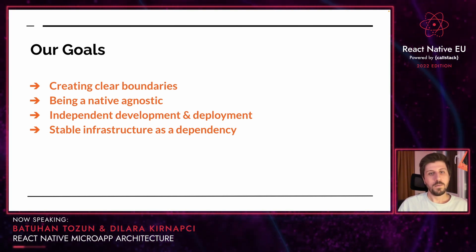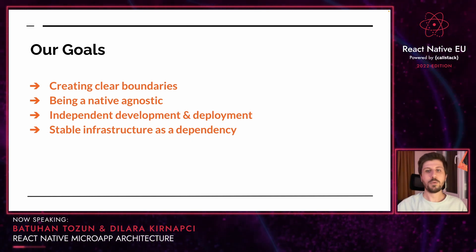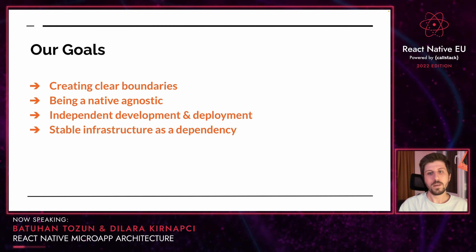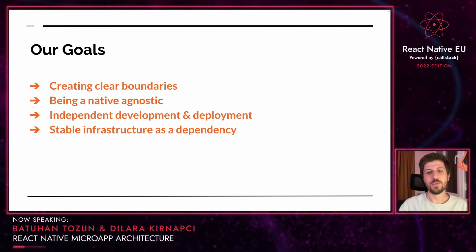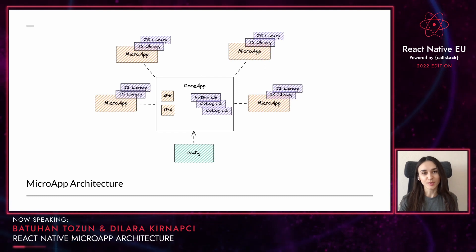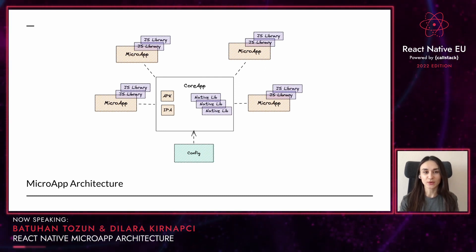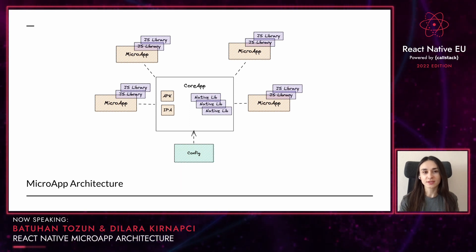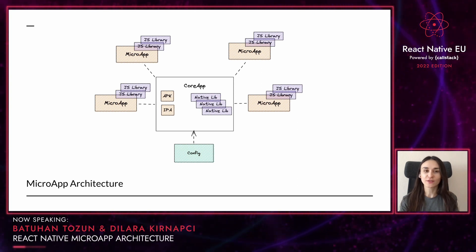Once we realized all of that and understood how quickly we are growing, we came to the conclusion that it won't be possible to achieve our goals with a simple monolithic React Native-based structure. Let's talk about the technical part. Basically, we divided the monolithic application into microapplications, as you can see in the main picture. Firstly, we will talk about the general structure, then we are going to dive into details.